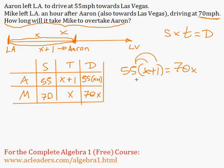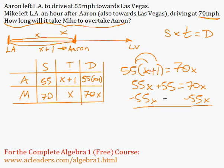So here we can distribute. 55 times x is 55x. 55 times one is 55 equals 70x. Now I can subtract 55x from both sides of the equation. 55 is equal to 15x. Then I can divide both sides by 15.